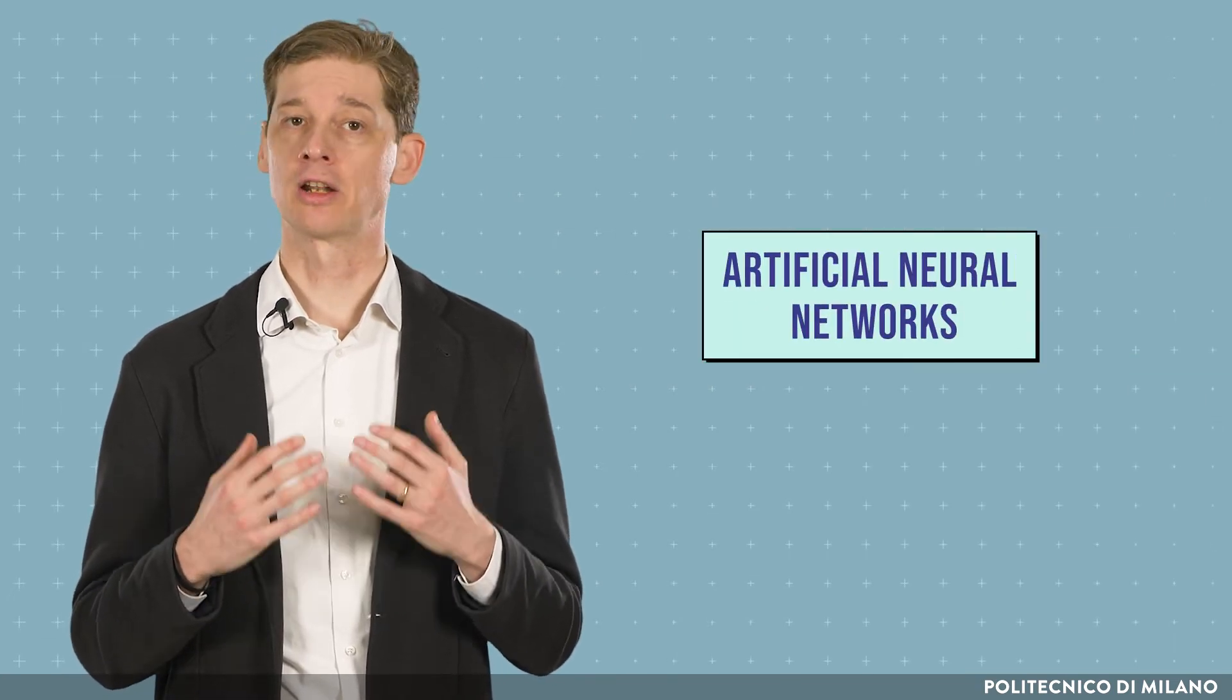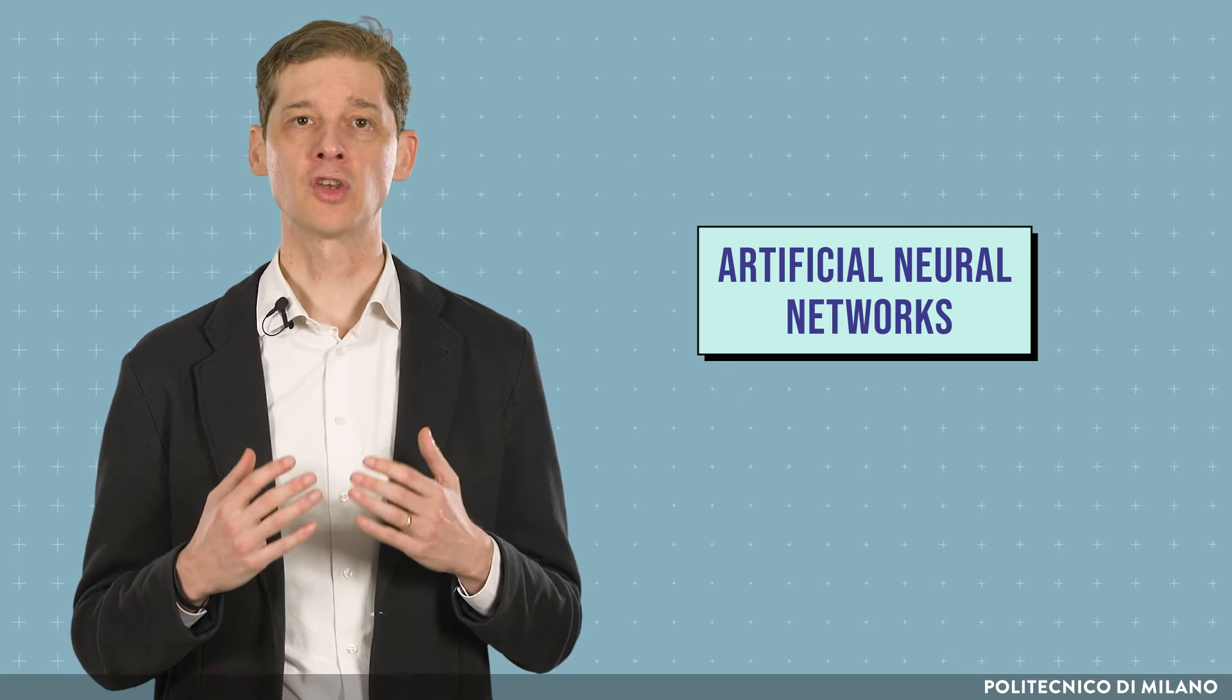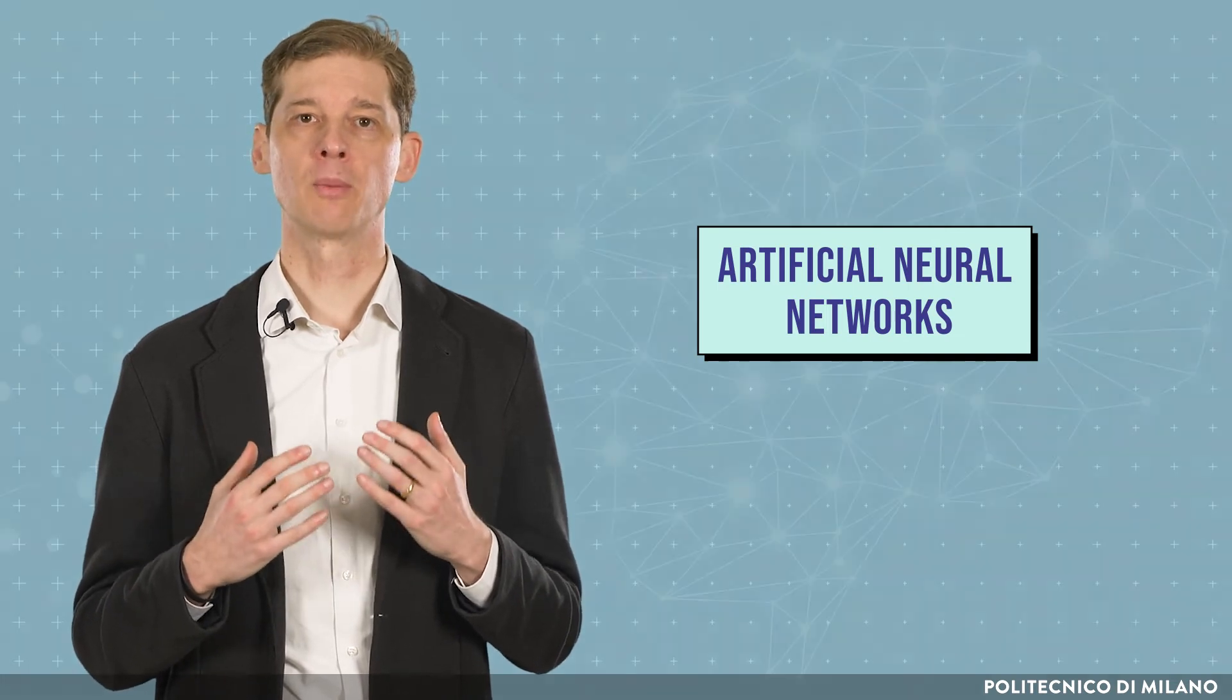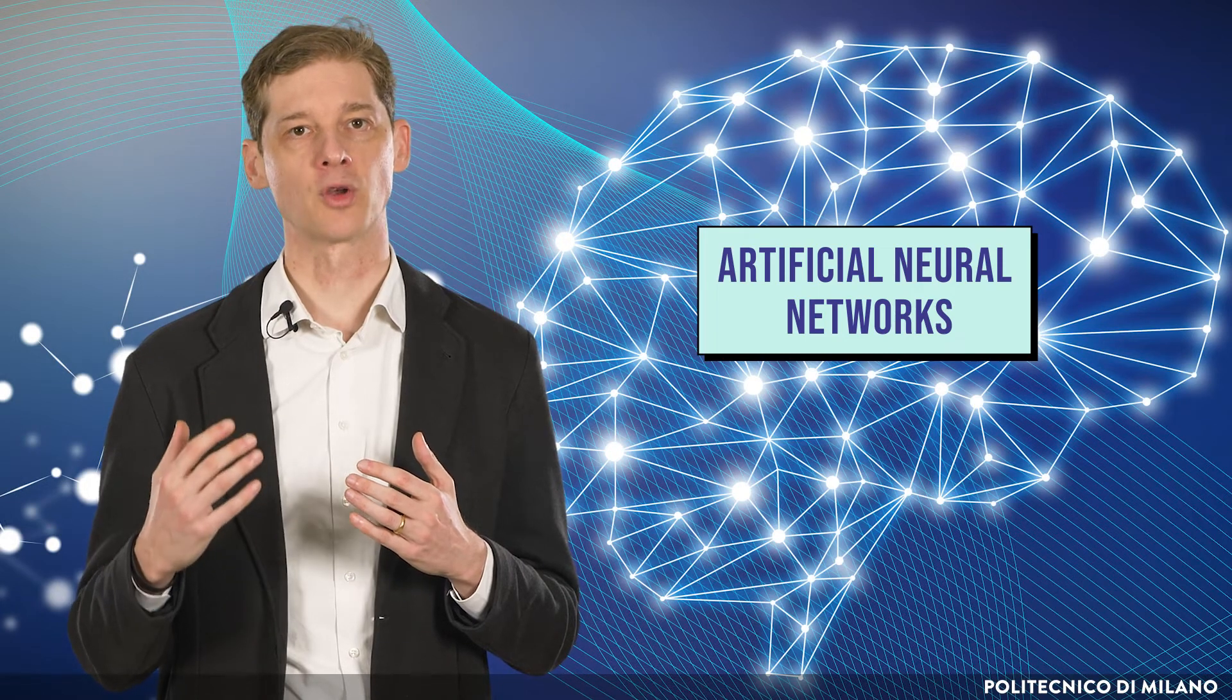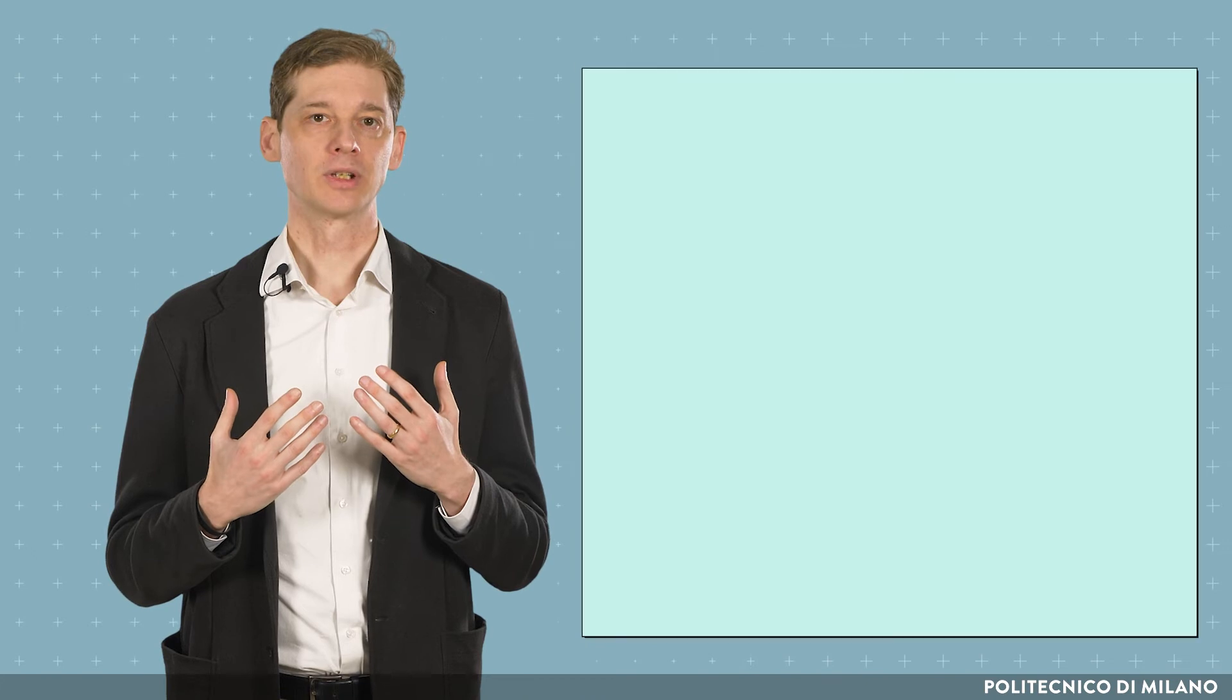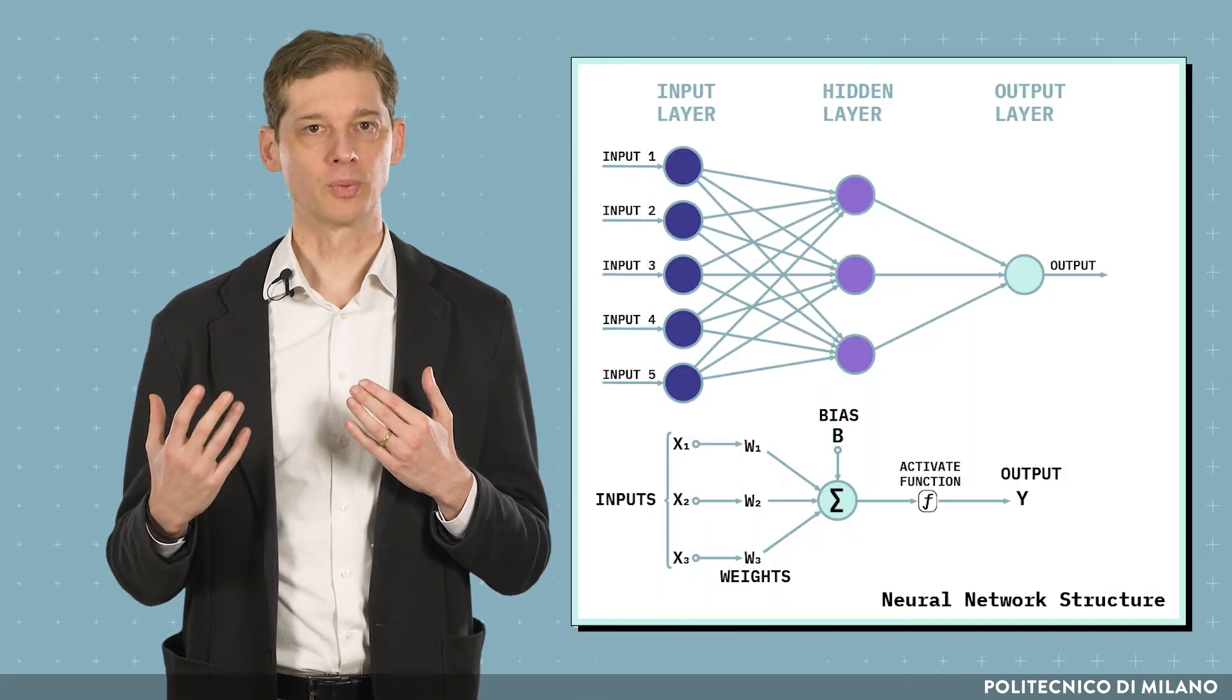On the other hand, when devising a reasonable set of features is difficult, a possible solution is to consider artificial neural networks. Artificial neural networks are computational models vaguely inspired by the way biological brains analyze and process information.